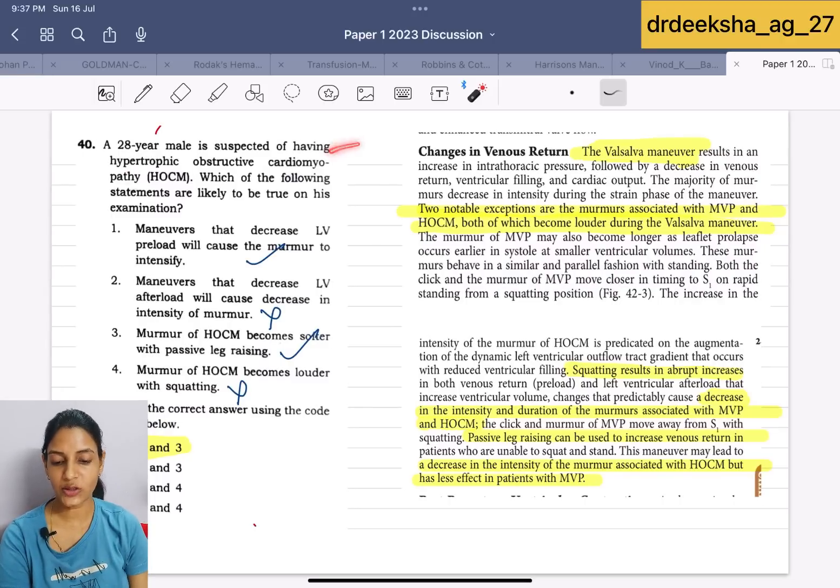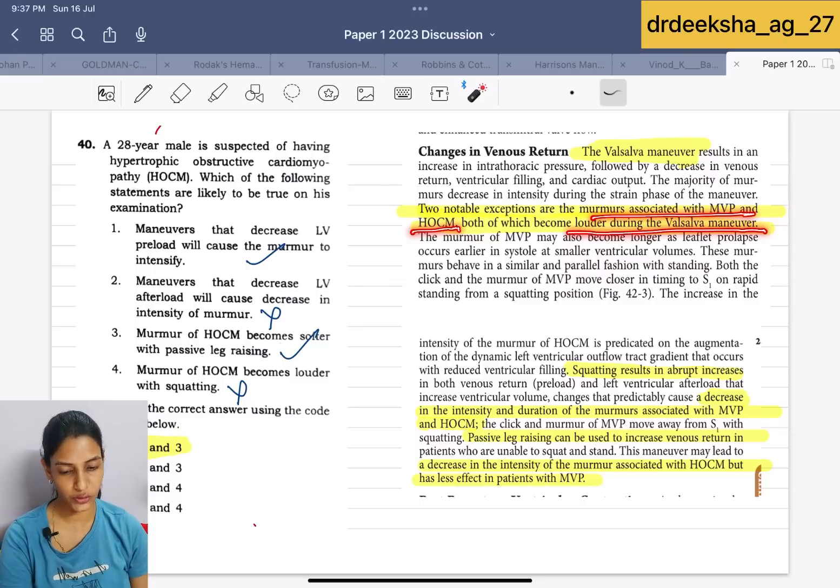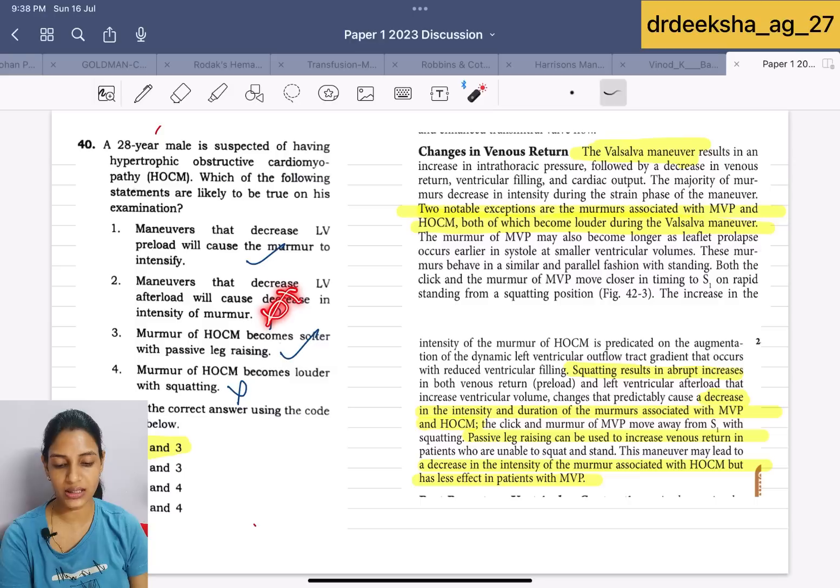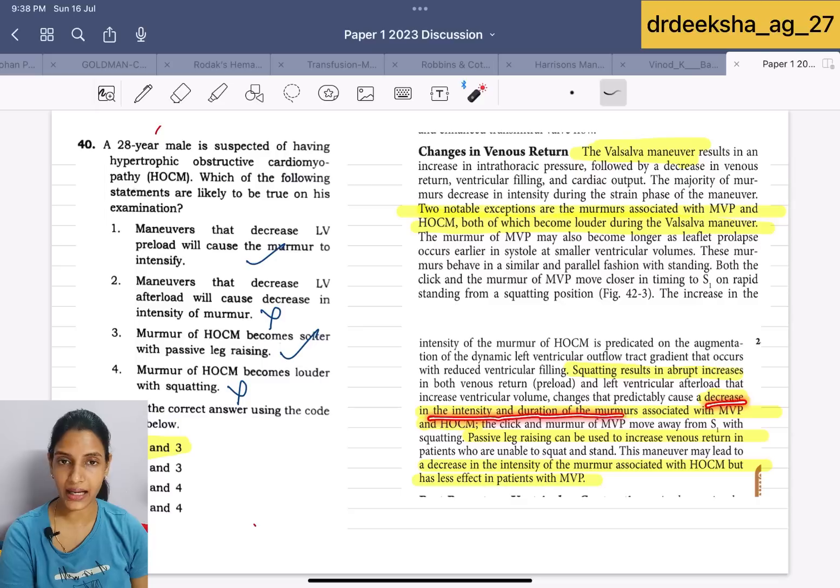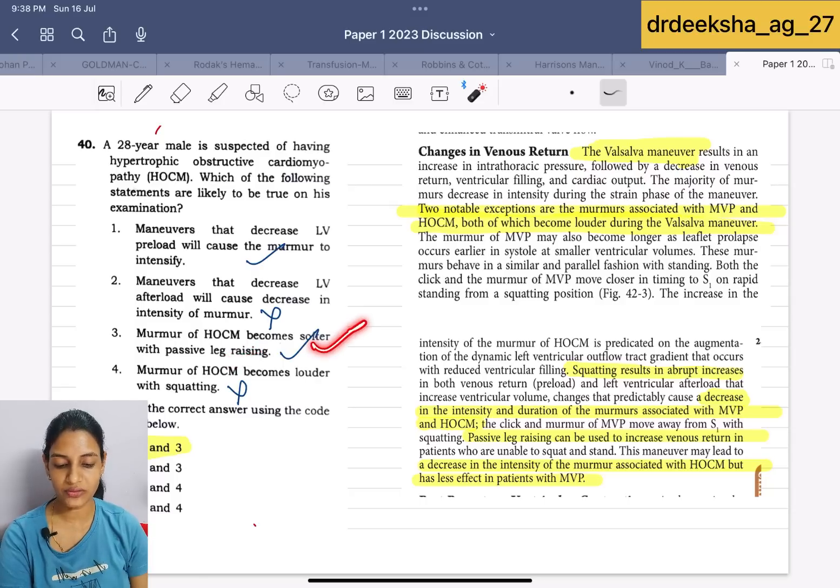There was a 28 year male suspected of having hypertrophic obstructive cardiomyopathy, which of the following statements are likely to be true on his examination? We all have heard about the Valsalva maneuver. In Valsalva maneuver, there were two exceptions that murmur associated with mitral valve prolapse and hypertrophic obstructive cardiomyopathy become louder during the Valsalva maneuver. First statement they are saying that maneuver decreased the preload but caused the murmur to intensify. That is true and the second one was decreased, that is wrong. On squatting result in abrupt increase of preload and afterload which causes the decrease in the intensity and duration of murmurs associated with the mitral valve prolapse and hypertrophic obstructive. While passive leg raising also leads to the decrease in the intensity of murmur. In passive leg raising murmur is softer, that is true. In squatting again there should be softer not louder. Answer for this is 1 and 3.